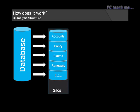So this is how BI works. You would have your live database, and the database would then send the information into our staging area. Now what I use here is a term called silos. What you would generally do is you would segregate and categorize your information into different areas — so you would have the accounts information, policy, claims, renewals.